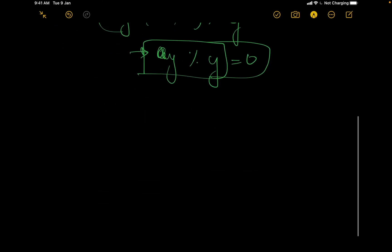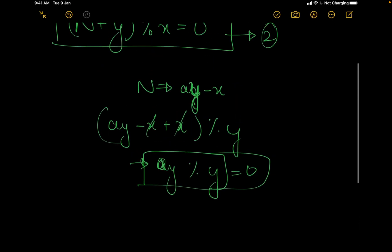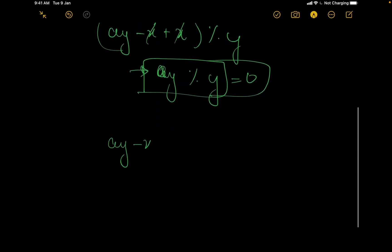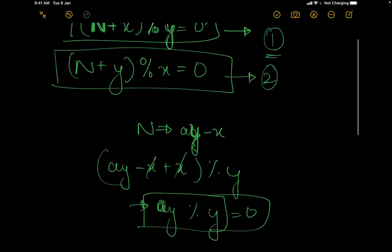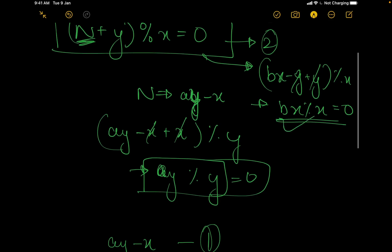What about the second equation? For my first equation, I had this ay minus x. For my second equation, I will write something like bx minus y. Let us try to check if that satisfies. Let me put bx minus y in place of n. This will become bx minus y plus y mod x. Then this can cancel out bx mod x equal to 0. So yeah, this is valid.